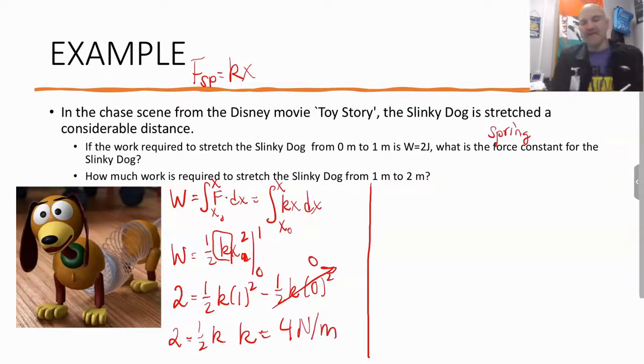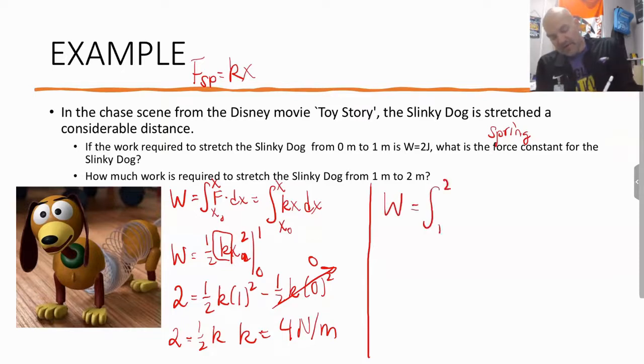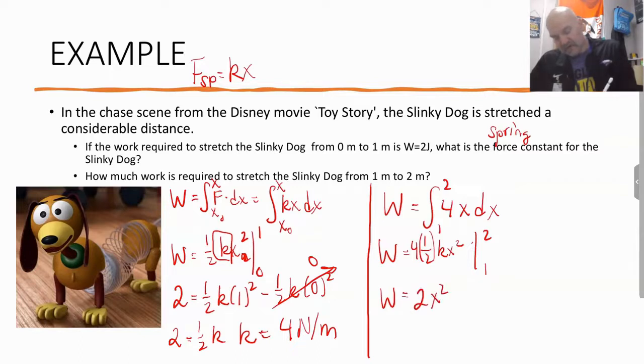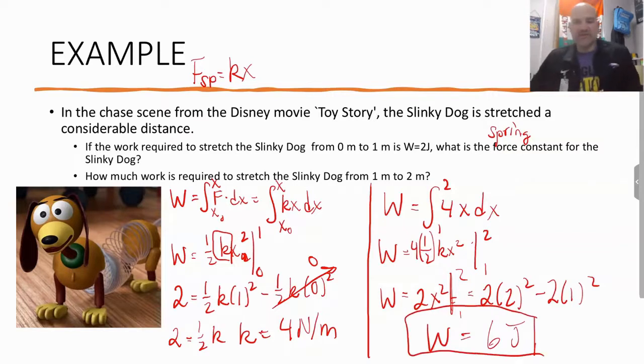So there is our force constant. Now we need that because now we've got to plug that into our equation to find the amount of work done stretching him from one meter to two meters. And something you'll find is that it's going to take more work to do this. Now I do my integral: four times one half kx squared, evaluated from one to two. So work equals two x squared, evaluated from one to two. So it's going to be two times two squared minus two times one squared. Two times two squared is eight minus two. So it's going to take six joules of work to stretch him another meter past what we already have.